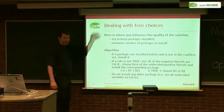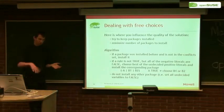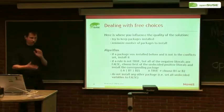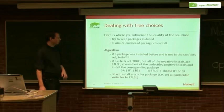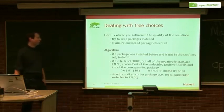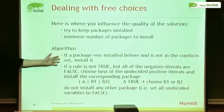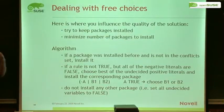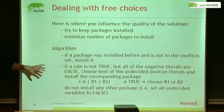Back to the free choices: this is where you can direct the solver toward its goal. The normal goal is to try to keep packages installed — erase as few packages as possible — and also minimize the number of packages that get added, because the user doesn't want changes that don't need to be done. The algorithm I implemented is: first, if there's a free choice, check if there are packages that were installed before and not yet set to install, and choose those. So the first step is to try to keep all already-installed packages installed. If the goal is to always have the newest version, we change this to try to install the newest version.